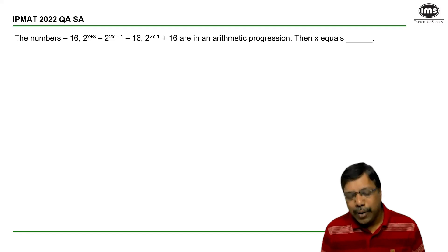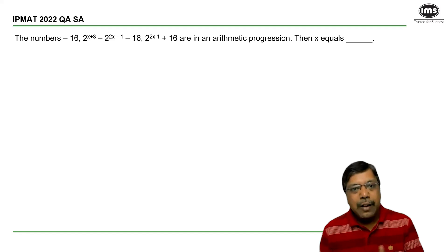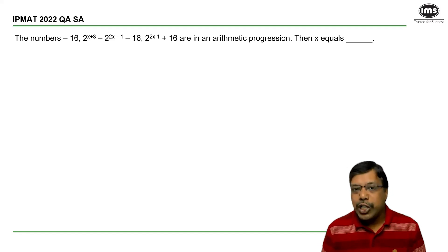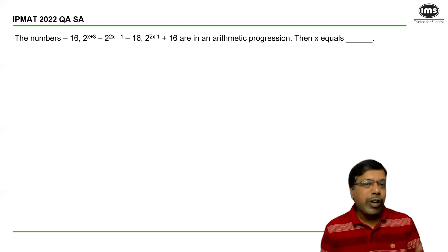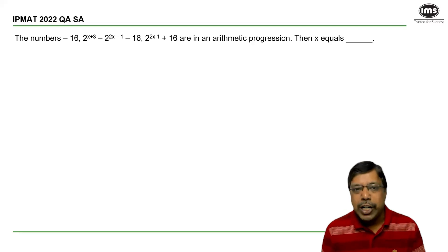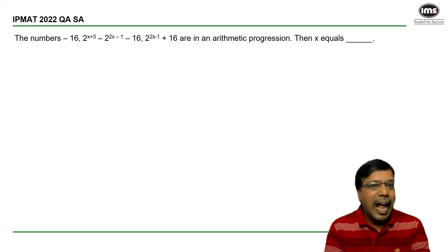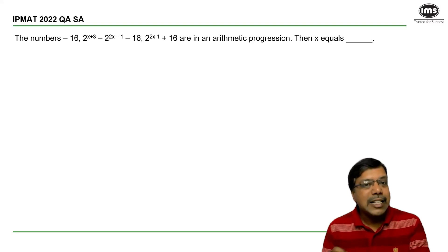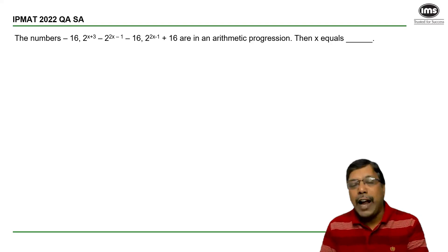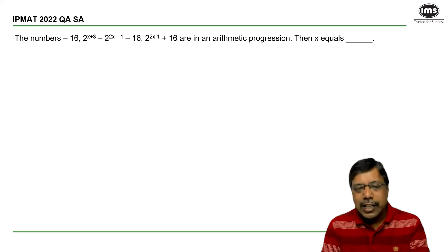Single liner, so understanding the question should be fast. The numbers given are in an arithmetic progression, then x equals to. Looking at the numbers, we can say the simplification is going to take a bit of time.